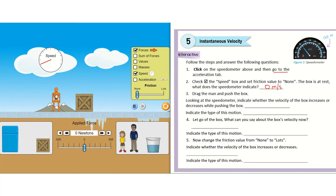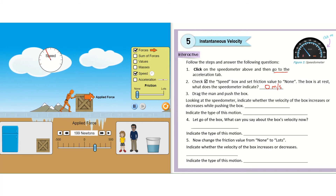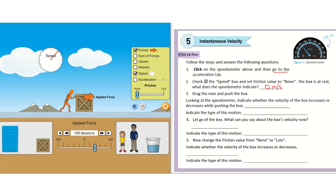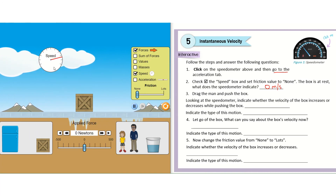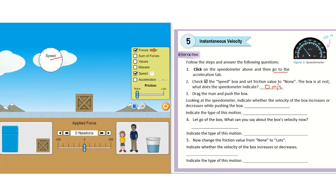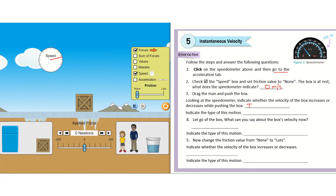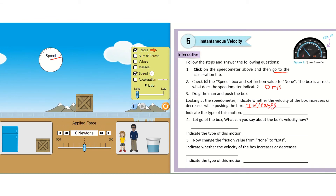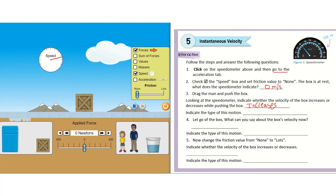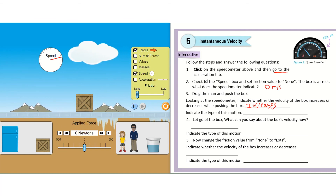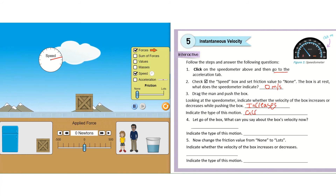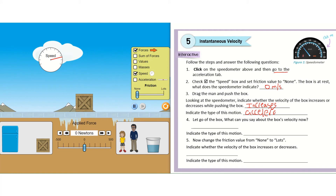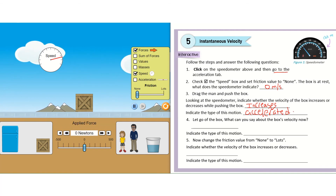Drag the man and push the box. Looking at the speedometer, the velocity was increasing. When the instantaneous velocity is increasing, we call this accelerated motion.